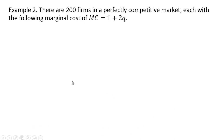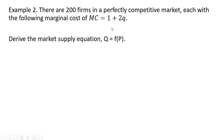Example 2. There are 200 firms in a perfectly competitive market, each with the following marginal cost of MC equals 1 plus 2q. Once again, we want to derive the market supply equation where the quantity supplied is a function of the price.